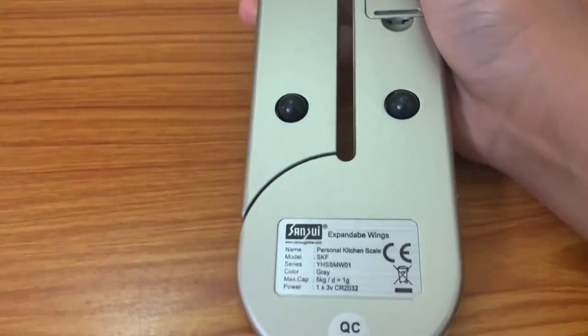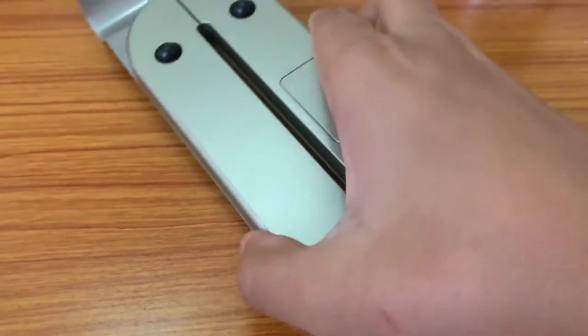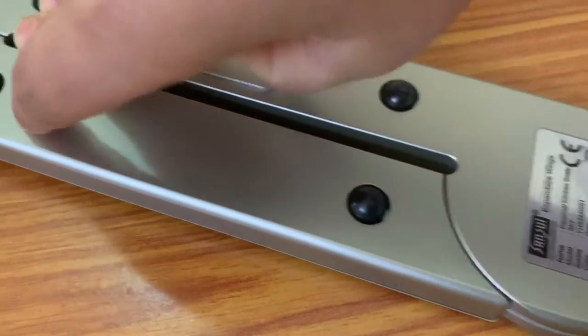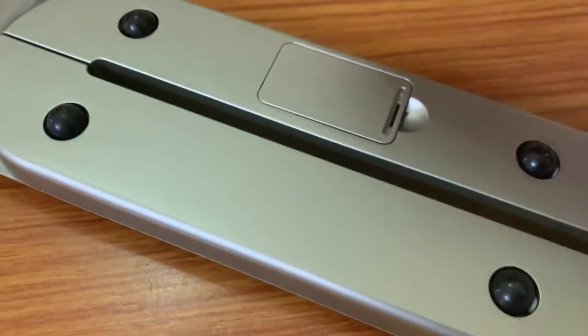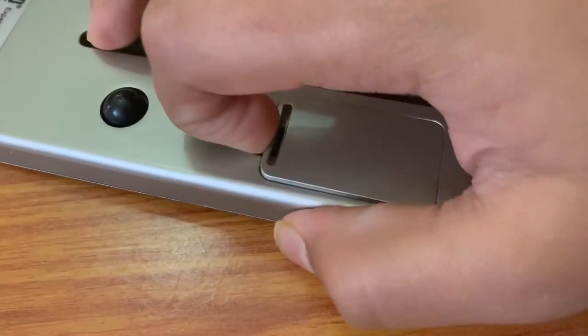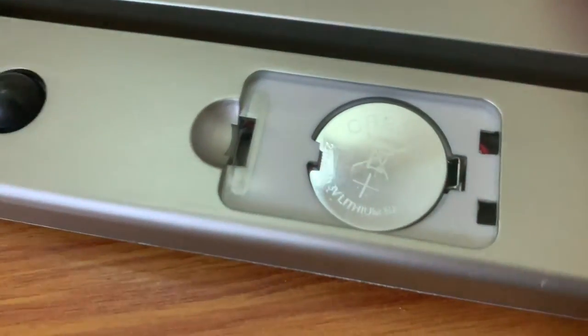So well, this is not a rechargeable weighing scale. So here, this is where the battery is stored over here. It is one circular battery. I don't know all the details about this battery, but this is the battery which is used.